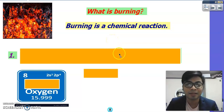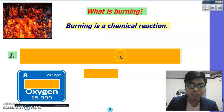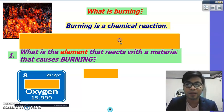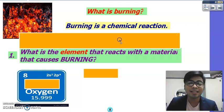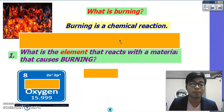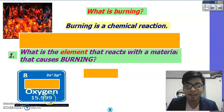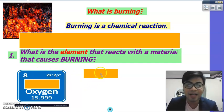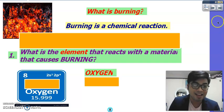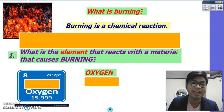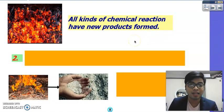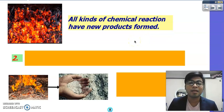Let's take a look at what burning is. Burning is a chemical reaction. Question number one: what is the element that reacts with material to cause burning? The clue is it is number eight in the periodic table. The correct answer is oxygen. All burning involves oxygen.